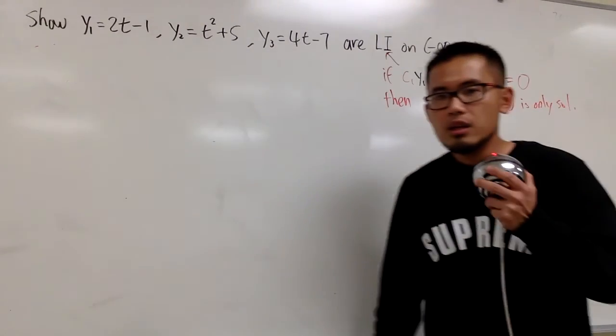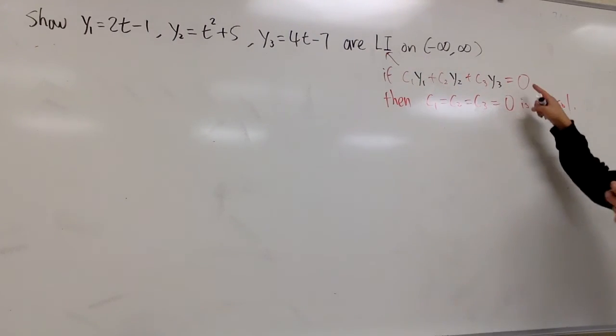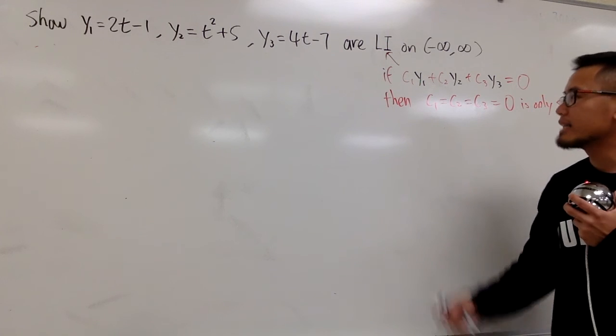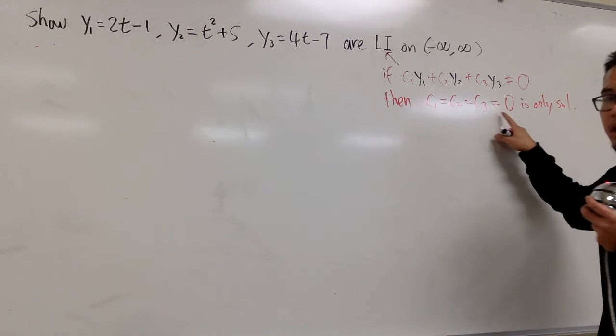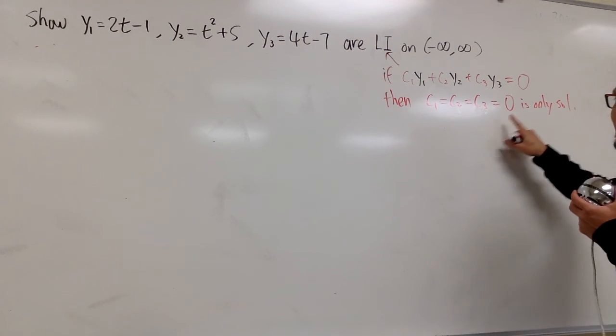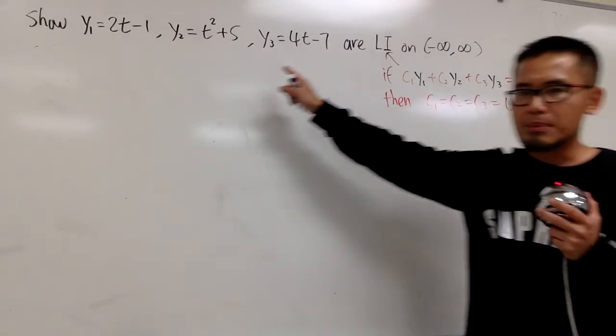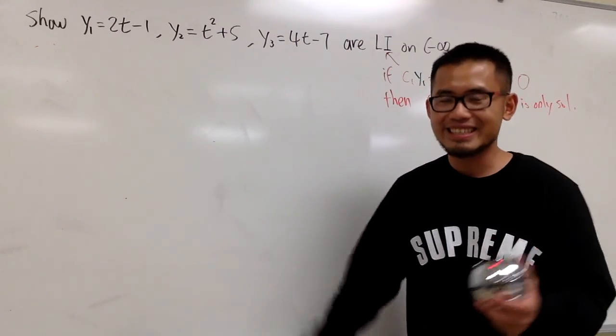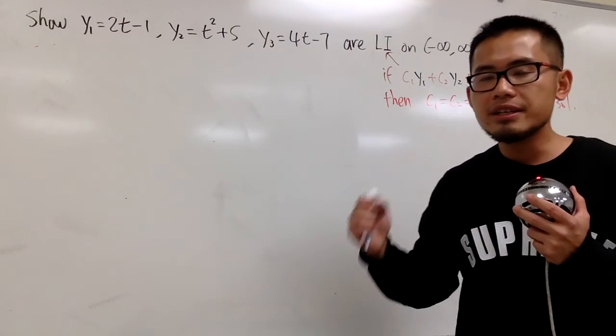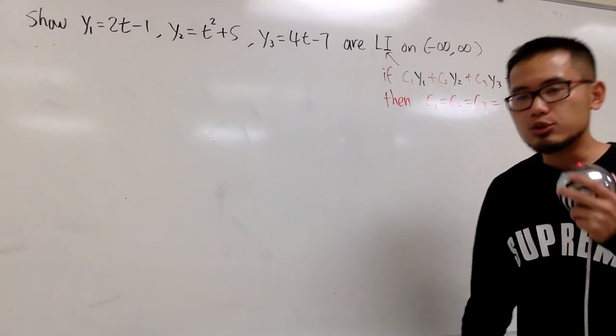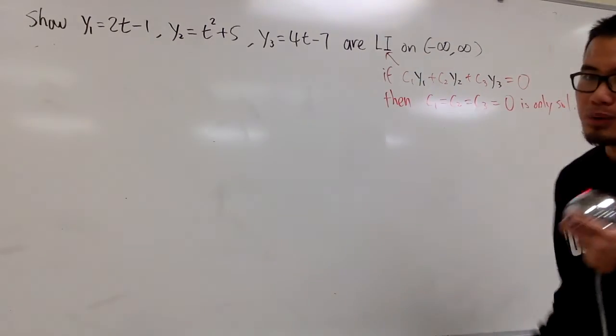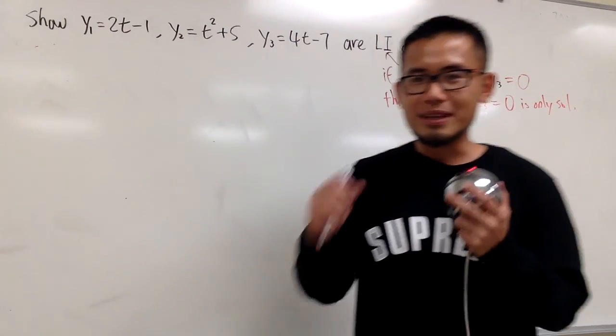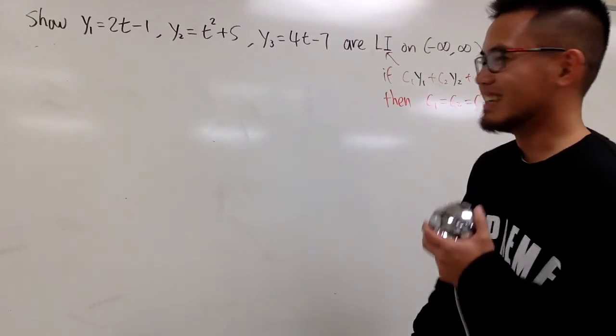So, once again, in order for you to make this happen, you have to show me and argue that c1, c2, c3, they are all 0, it's the only solution that will make this happen, then in that case, these functions are linearly independent. So it's really different, this is harder, but I will just show you guys anyway, because I need to redeem myself from the class today.